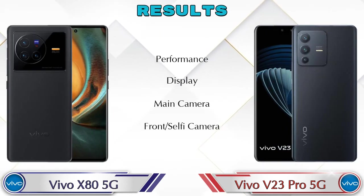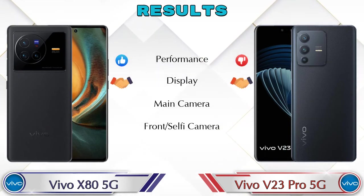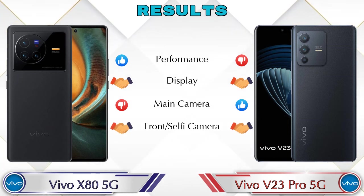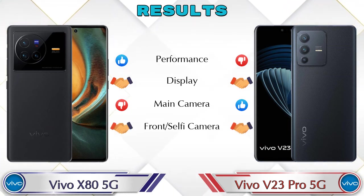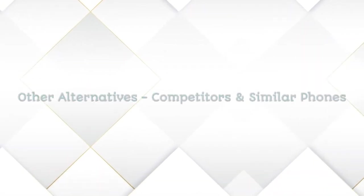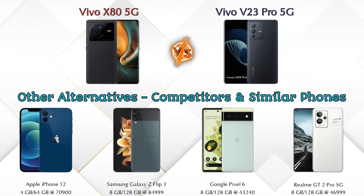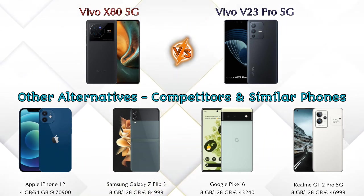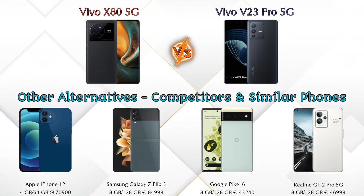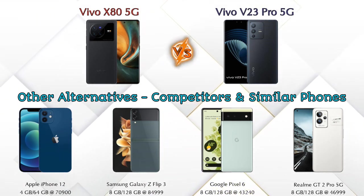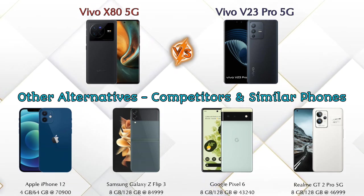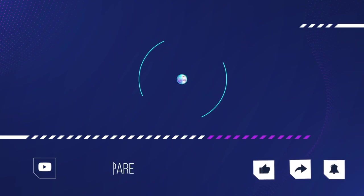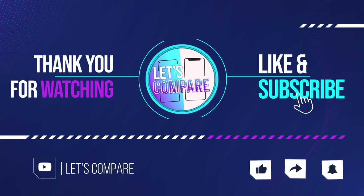In summary: for performance, the Vivo X8 5G is ahead. For display, both phones are similar. For the main camera, the V23 Pro 5G is ahead. For the front selfie camera, both phones are comparable. At the same price segment, key competitors include the Apple iPhone 12, Samsung Galaxy Z Flip 3, Google Pixel 6 5G, and Realme GT2 Pro 5G — details about all these phones are available in the description. If you liked the video, please like and subscribe. Thanks for watching!